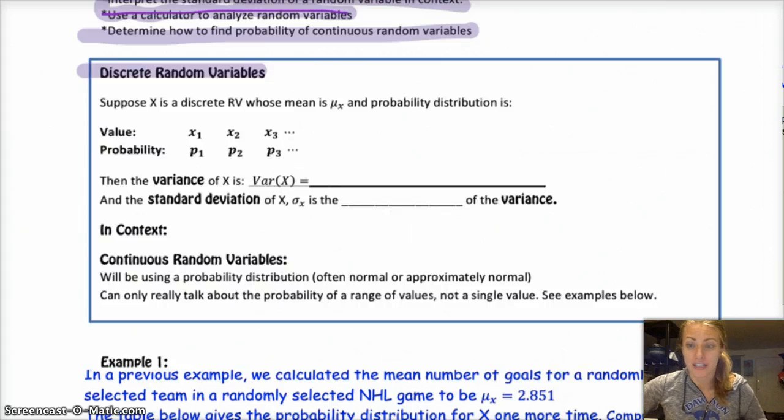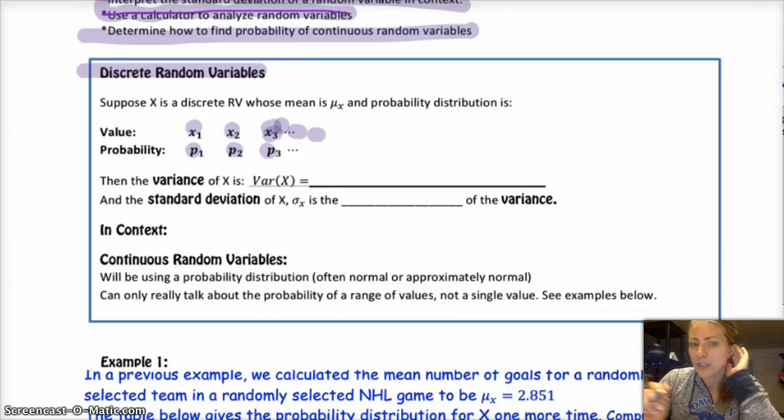Okay, suppose you have a discrete random variable, we're going to call it x. And it has a mean, mu sub x. And it has a probability distribution where your x1, x2, x3, dot dot dot, those are all your possible outcomes for the discrete random variable. And then p1, p2, p3 are all the corresponding probabilities of each event, each outcome occurring.